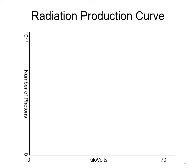If we draw a graph comparing the energy of photons in kilovolts versus the number of photons produced, we will end up with a curve that looks something like this. A curve that favors low energy interactions over high energy interactions.